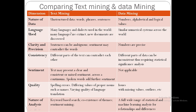Regarding language: text mining involves many languages, dialects, and newly discovered documents, whereas data mining uses a similar numerical system across the world. Regarding clarity and precision: sentences in text mining can be ambiguous, and sentiment may contradict the words, whereas numbers in data mining are precise. Regarding consistency: different parts of a text can contradict each other, while in data mining different parts of the data can be inconsistent, requiring statistical significance analysis.